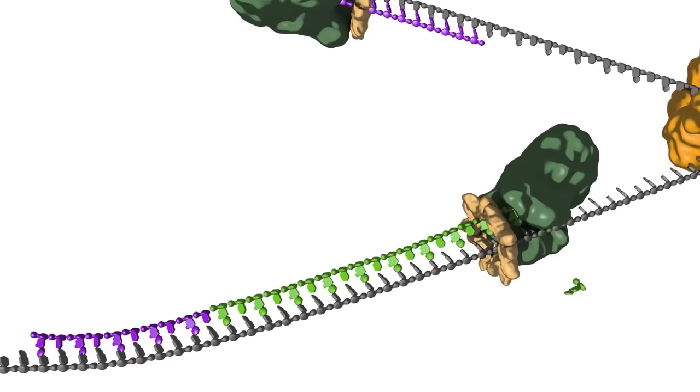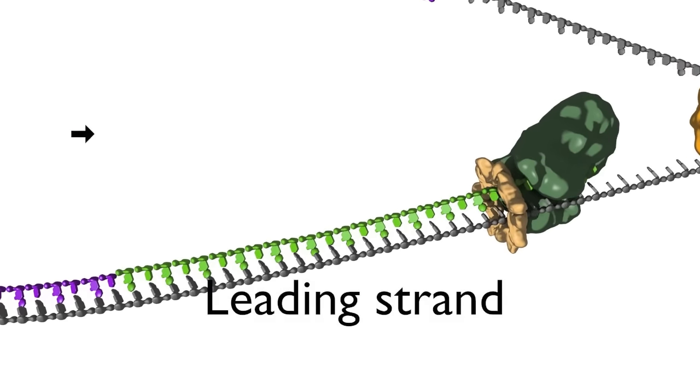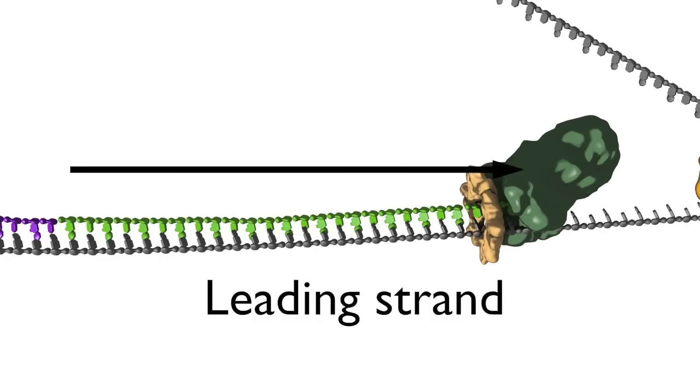The bottom strand in this fork is the leading strand. The polymerase on this strand moves continuously from left to right, synthesizing DNA as it travels.